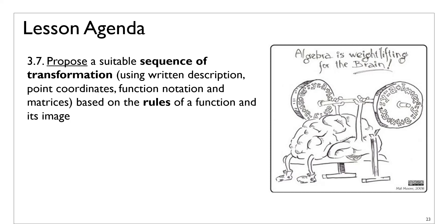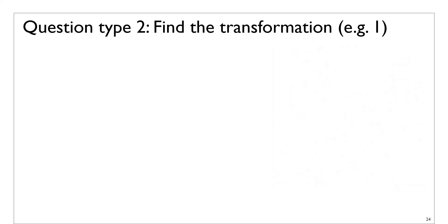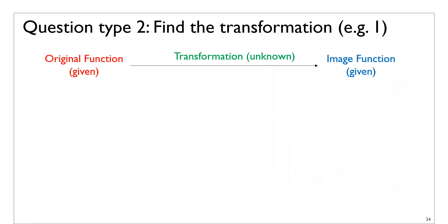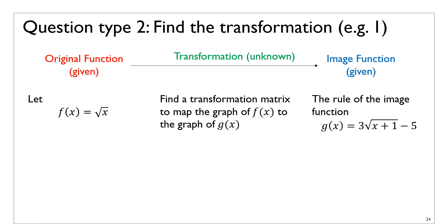This lesson we're going to look at the second type of question relating to transformation, which is to propose a suitable sequence of transformations from the rules of the original function and the image — that's question type 2. In some cases it's very easy to tell what the transformation is, such as in this first example on the screen, and that's normally when the original function is pretty basic — literally the base function.